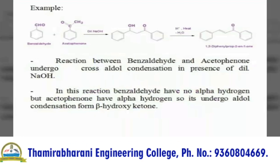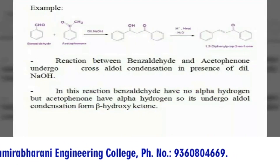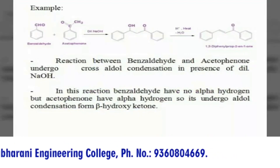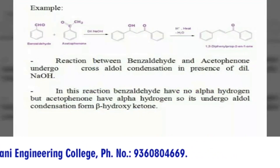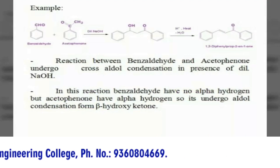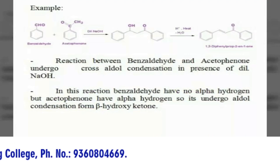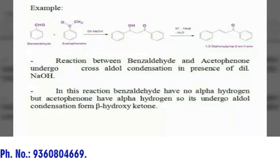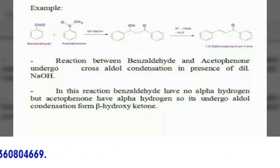For an example, the reaction between benzaldehyde and acetophenone undergoes cross aldol condensation in the presence of dilute sodium hydroxide. In this reaction, benzaldehyde has no alpha hydrogen but acetophenone has alpha hydrogen, so it undergoes aldol condensation to form a beta hydroxy ketone.